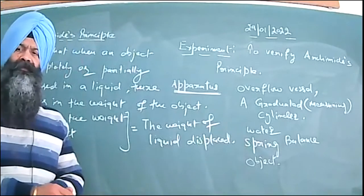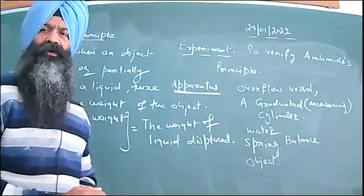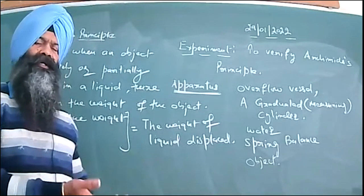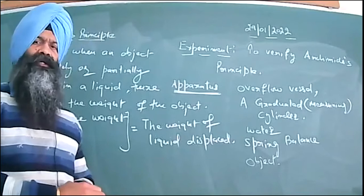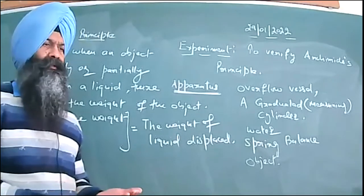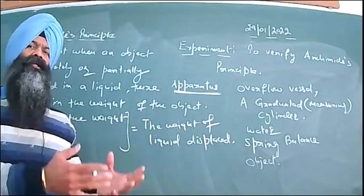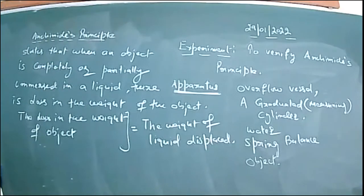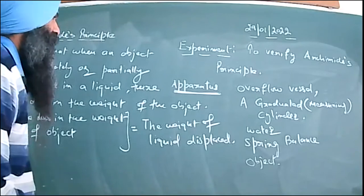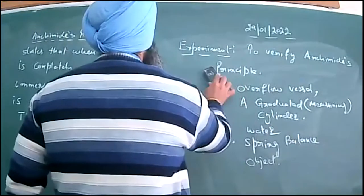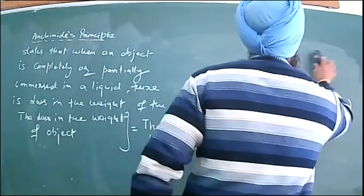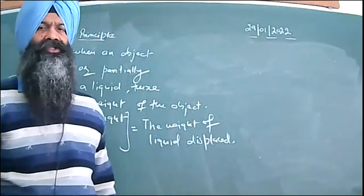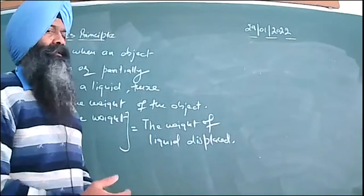First, find the weight of the object in air, then find its weight in the liquid. The weight in the liquid will be less; the weight in air will be more. The loss is obtained by subtracting the weight in the liquid from the weight in air. After finding the loss in weight, also find the weight of the liquid you have collected in the collecting cylinder.